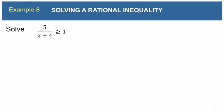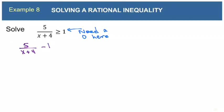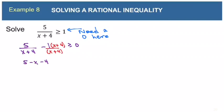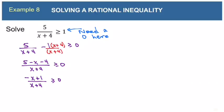This next example has a 1 on the right side. We cannot find critical numbers because we don't have a zero on the right side. So let's move the 1 over to the left side and get a common denominator. Remember that the left side has to be all one fraction before you can find your critical numbers. The denominator needs to be x plus 4, so multiply top and bottom of that term by x plus 4. Now distribute the negative 1 and combine like terms: 5 minus 4 is 1, giving us negative x plus 1 over x plus 4, greater than or equal to zero.